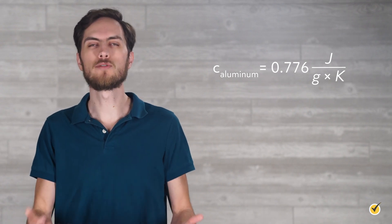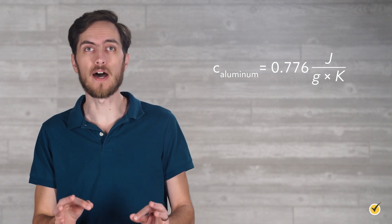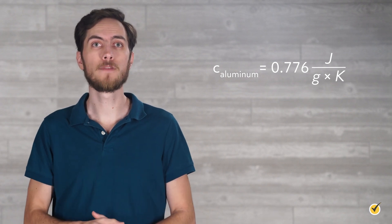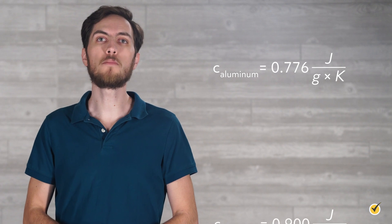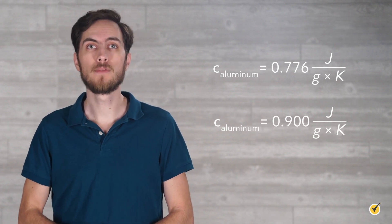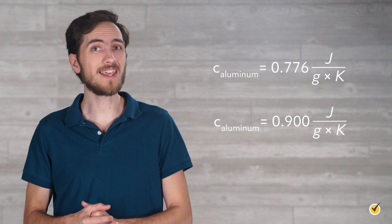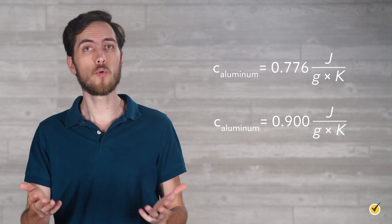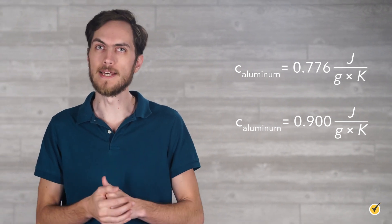Let's compare this to the literature value, or the highly accurate value that's been determined by chemists. The literature value is 0.900 joules per gram kelvin. Our experimental value is certainly in the ballpark, but it's still 14% off. Why is that?